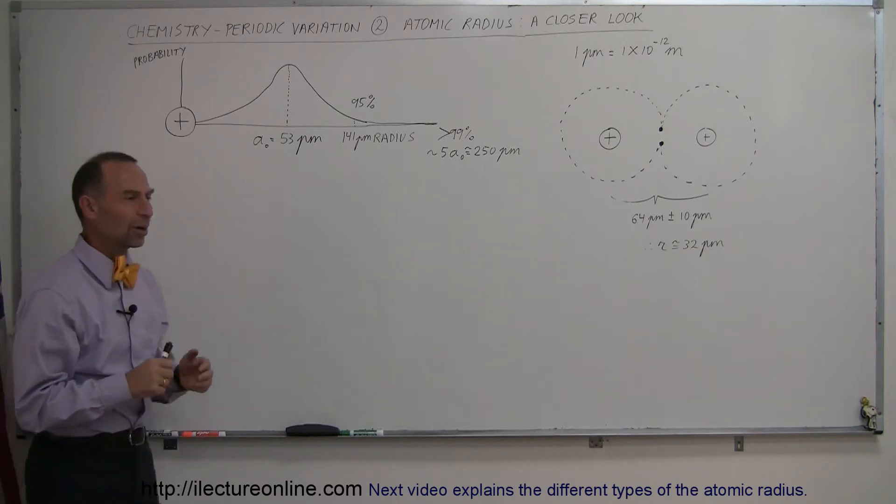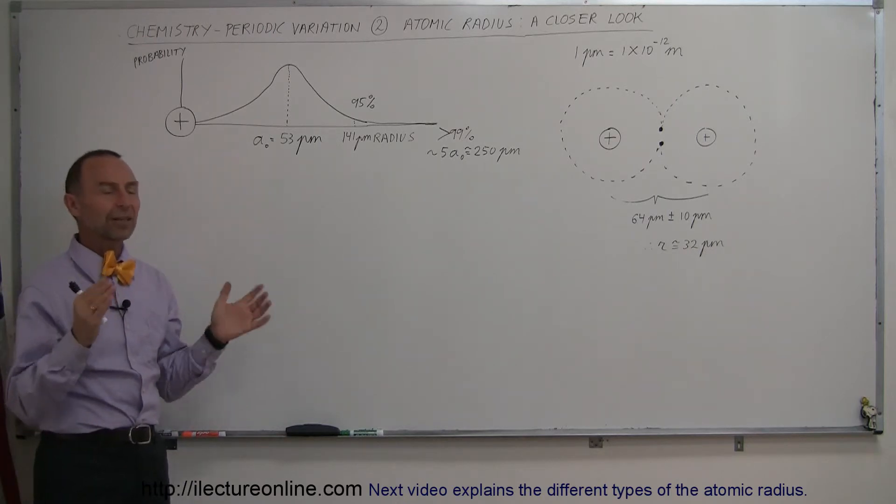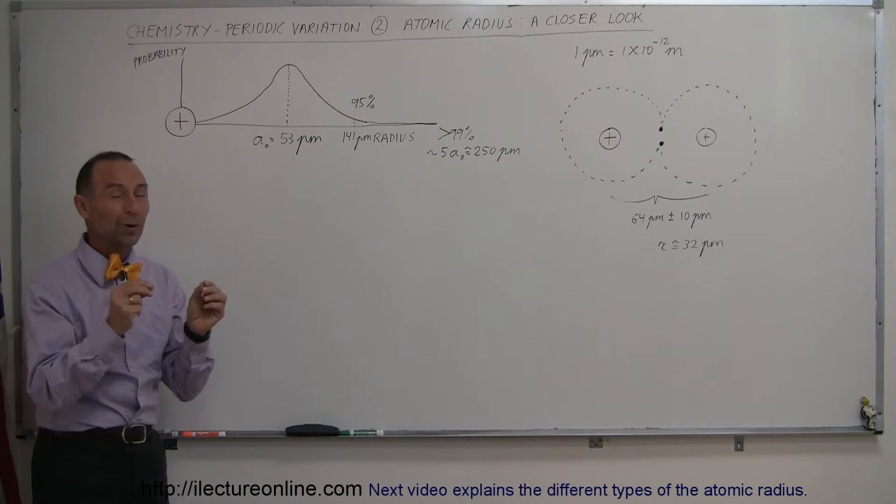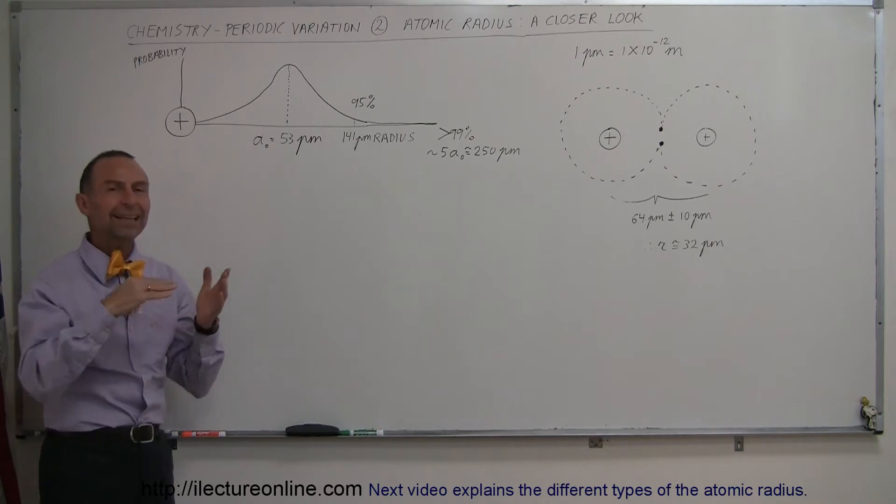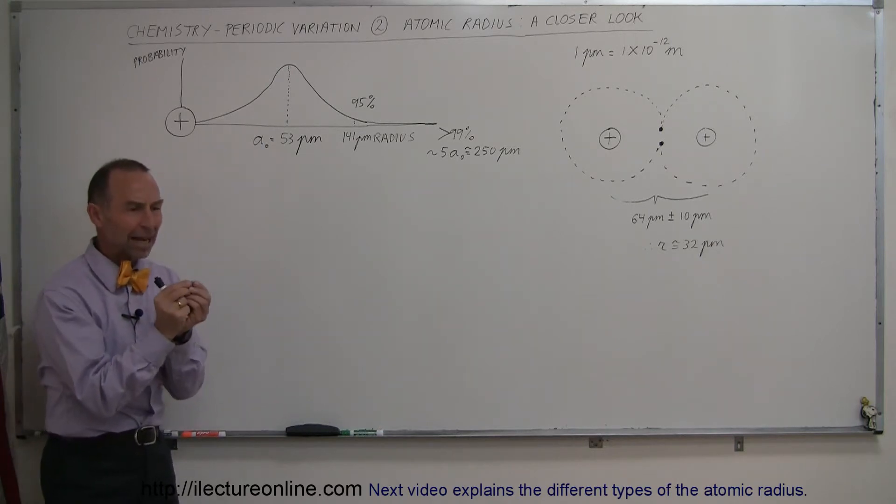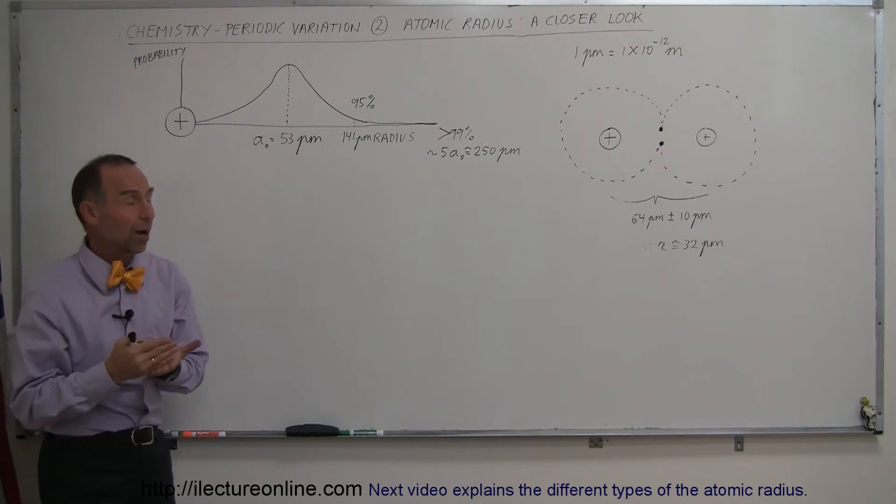Remember in the last set of videos, we talked about the quantum mechanics states of the electrons, where electrons could be, where they could be found, and it usually was part of the solution to the Schrödinger equation, which gave us a probability density function, and from that, we could actually calculate the probability of where we could find the electron.